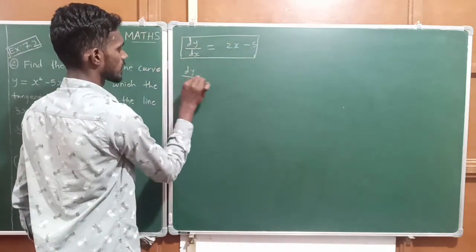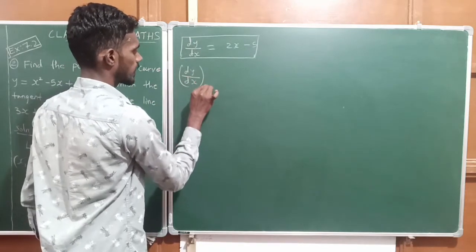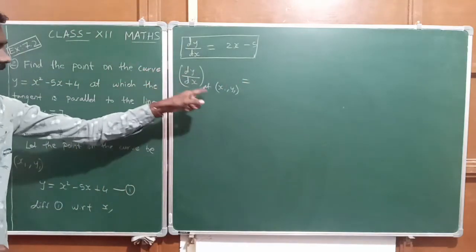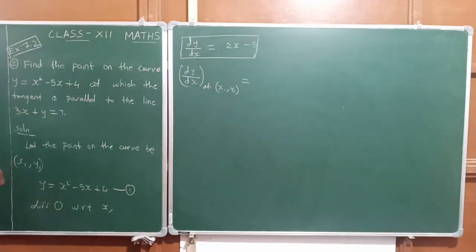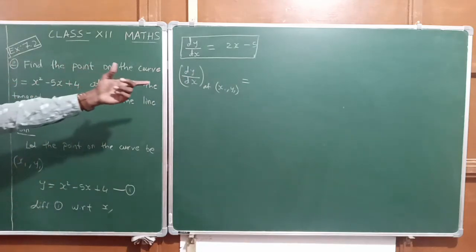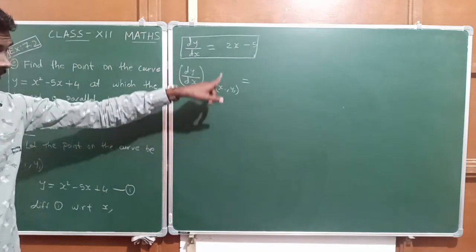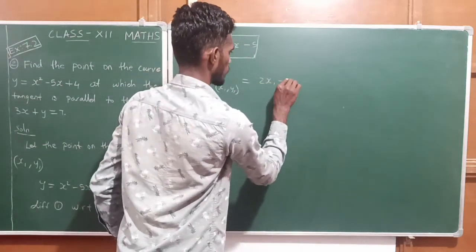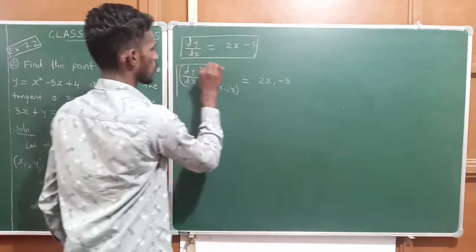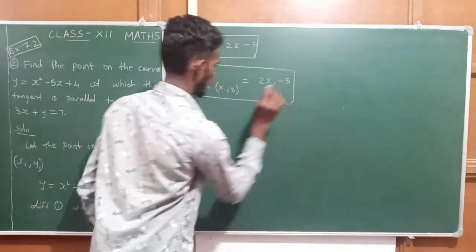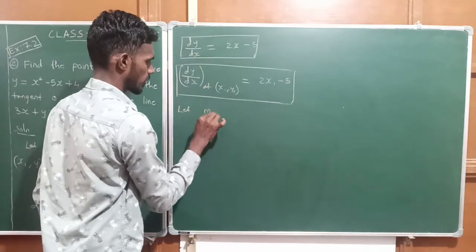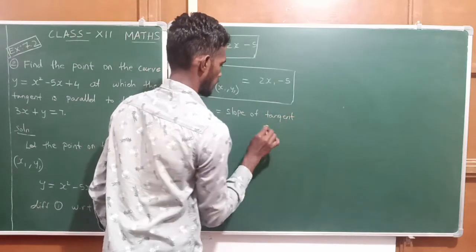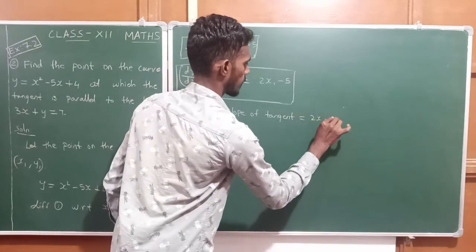dy by dx at x1, y1 gives the slope of the tangent. dy by dx at a particular point gives the slope of the tangent. So substituting x with x1 in the equation, we get 2x1 minus 5. Let m1, that is the slope of the tangent, be equal to 2x1 minus 5.